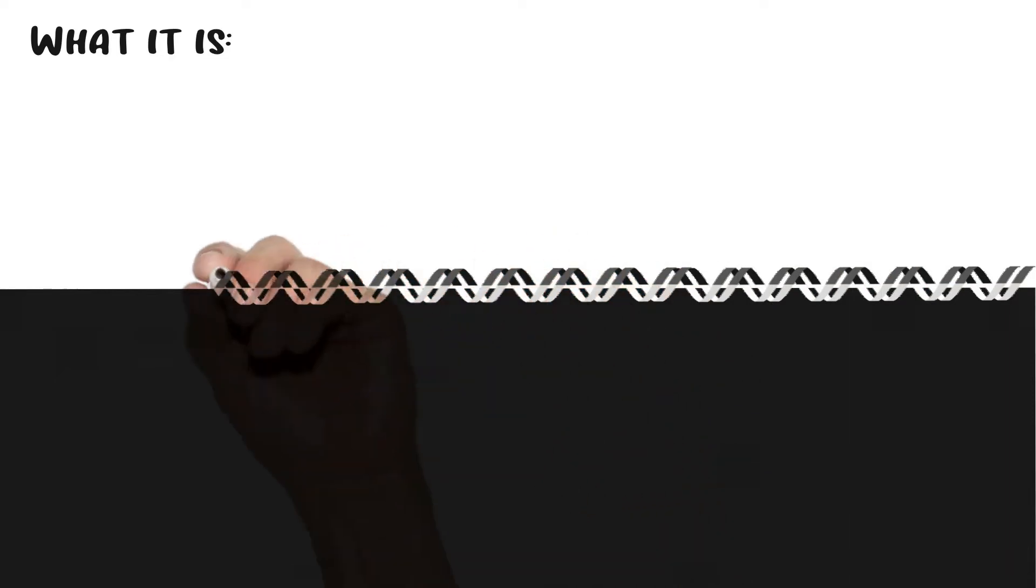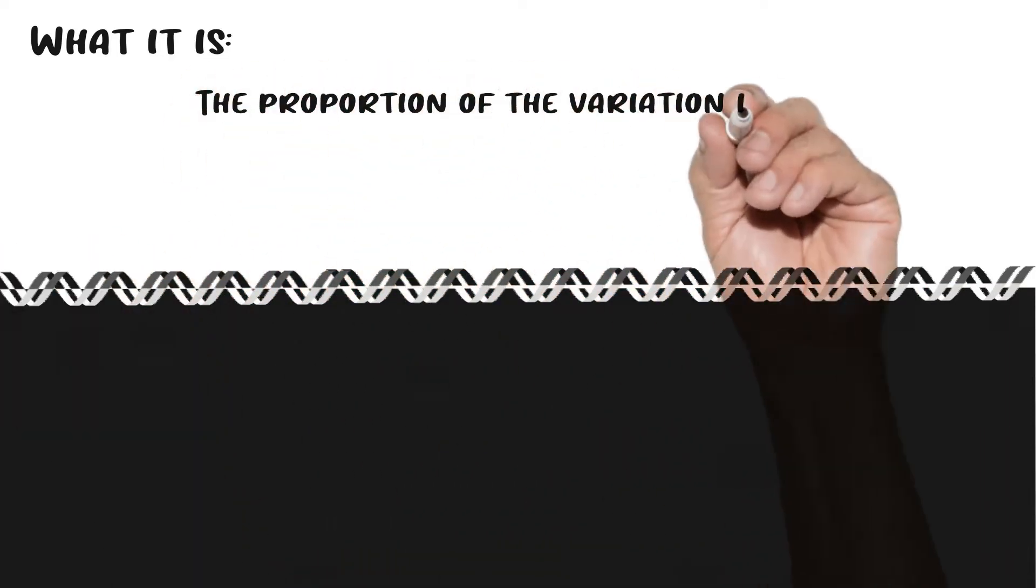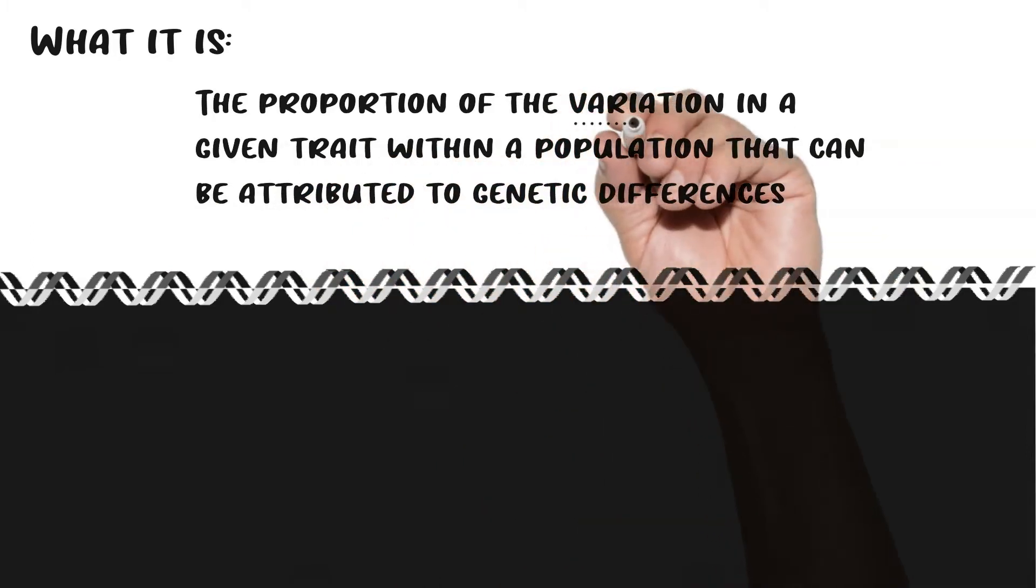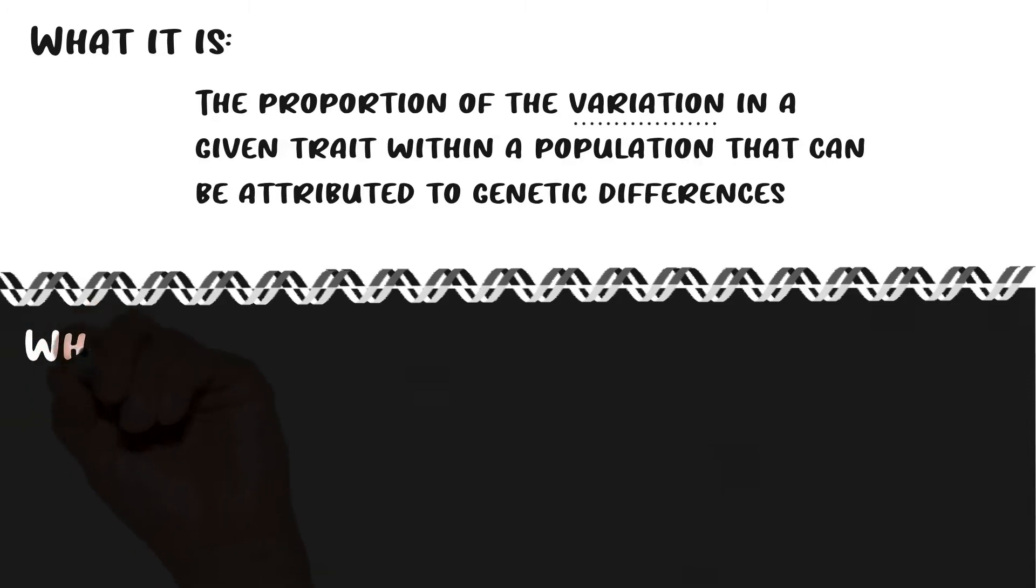So the proper definition is the proportion of the variation in a given trait within a population that can be attributed to genetic differences. And I see something like that and I'm like, yeah, sure, that makes sense. But the truth is, it's a little bit more confusing than it appears.